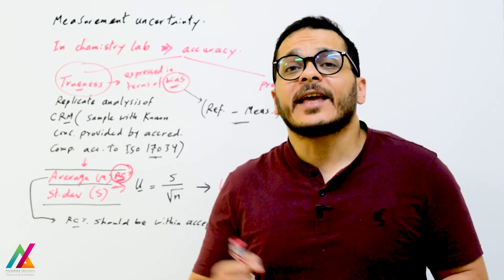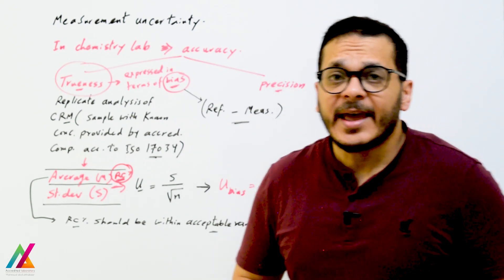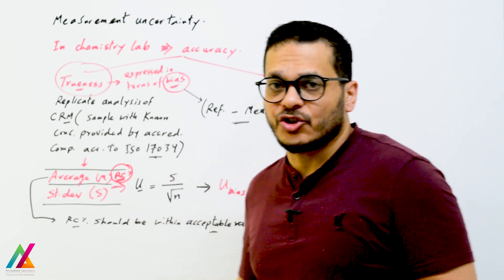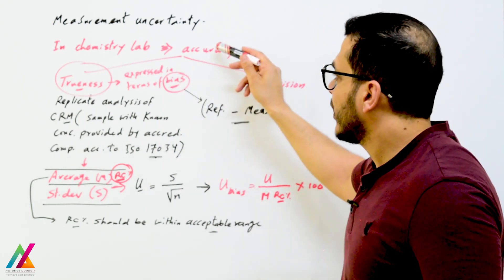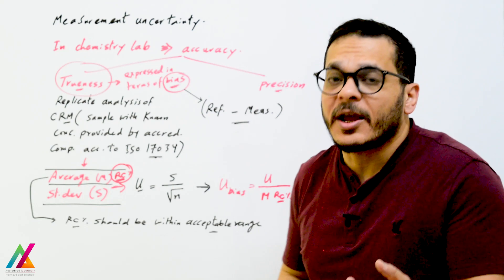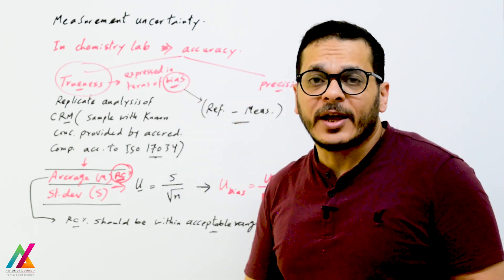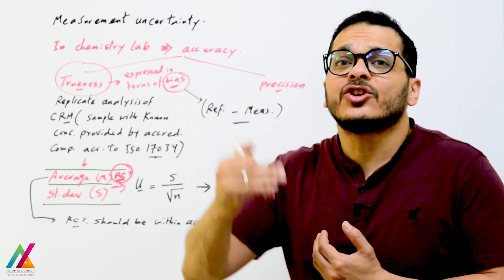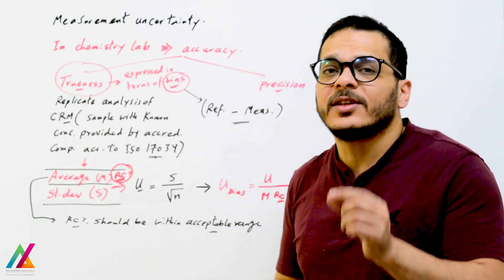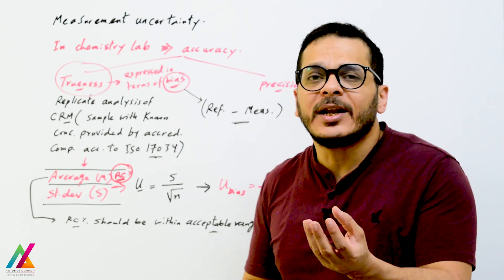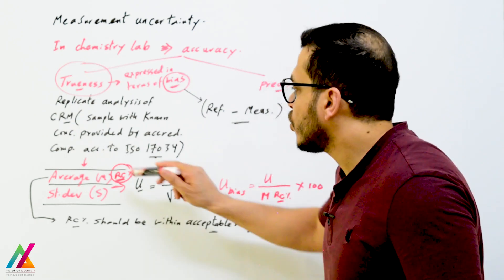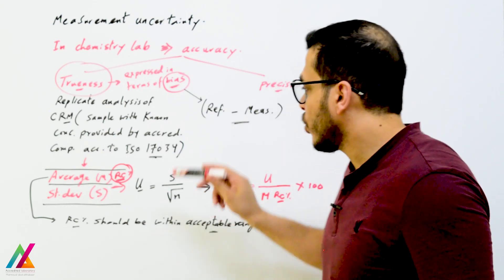Now I will explain the differences between chemistry lab and microbiology lab in calculating uncertainty. In a chemistry lab, accuracy is evaluated through trueness and precision. Trueness is expressed in terms of bias — the difference between the reference value and the measured value — giving the deviation from the true or reference value. This involves replicate analysis of a certified reference material, which is a sample containing target analytes at known concentration, provided by a company accredited to ISO 17034.